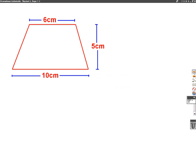Here's our trapezium. We can see that the bottom of the trapezium is 10 centimetres and the height across, the length across the top of the trapezium is 6 centimetres and the height of trapezium is 5 centimetres up.